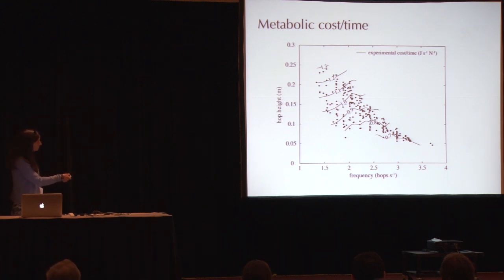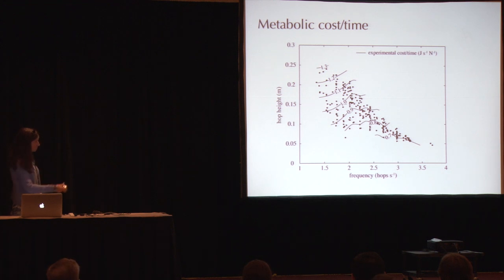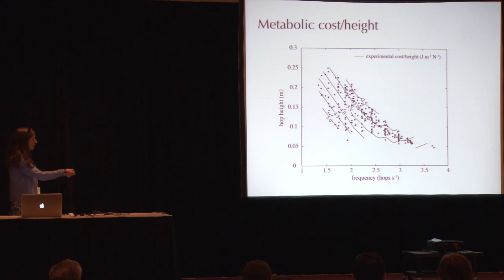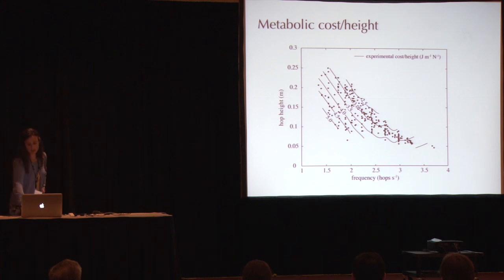We see roughly a similar trend — metabolic cost is lowest at higher frequencies and lower heights. For metabolic cost per height, though, we see a somewhat different trend: the lowest costs are at high frequencies and high hop heights.